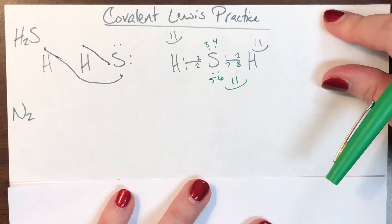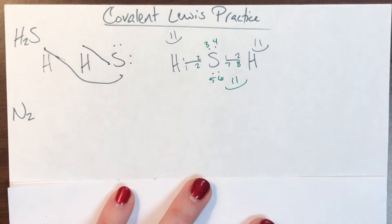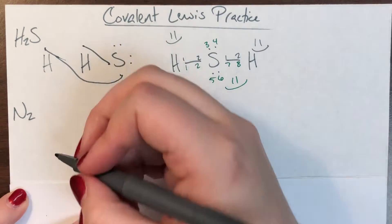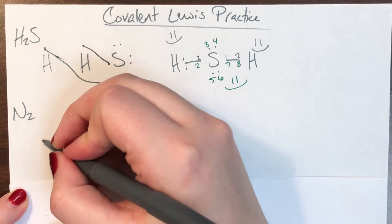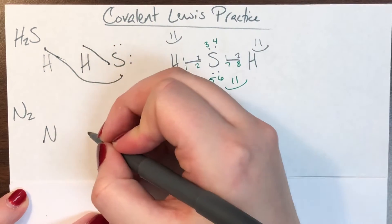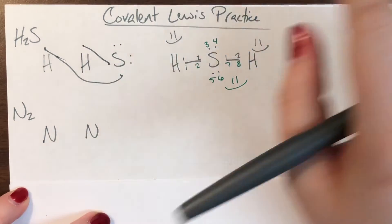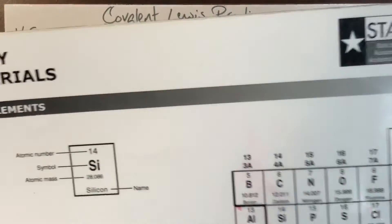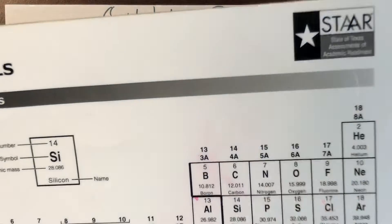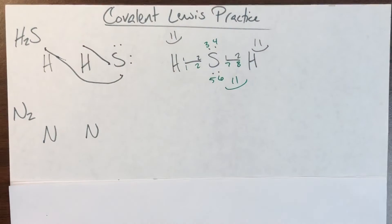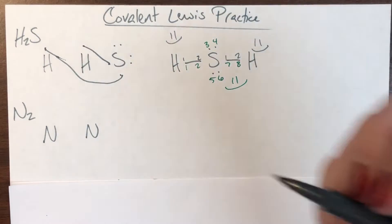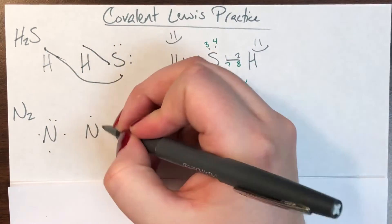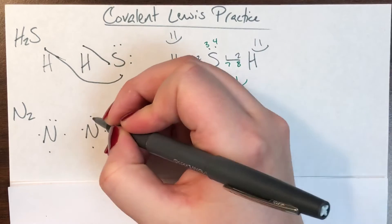Next we have N2, the nitrogen molecule. I'll go ahead and draw two nitrogens. Nitrogen is in column five, so each nitrogen is going to have five total dots: one, two, three, four, five for the first nitrogen, and one, two, three, four, five for the second.